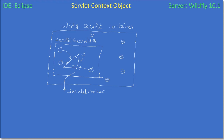Inside the servlet context it can hold different objects, and those objects are shared among the servlets. If you consider here we have four servlets, all four servlets share the servlet context. Whatever we store inside the servlet context is available to all the servlets.